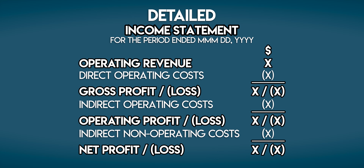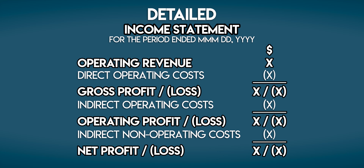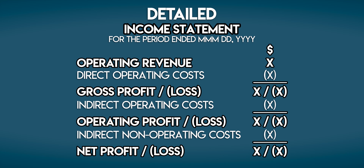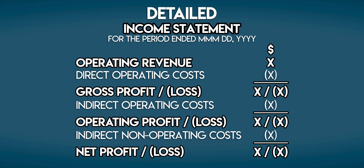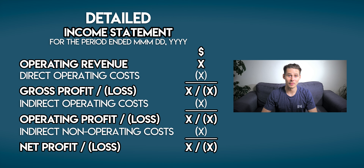Beneath that, we subtract any indirect operating costs or overheads to reach an operating profit or loss. And finally, we take away the indirect non-operating costs — things like interest expenses and tax — which brings us down to the bottom line, the business's net profit or loss.